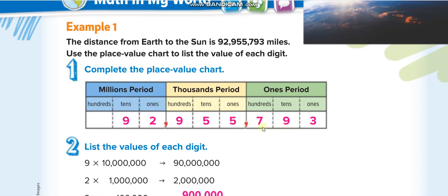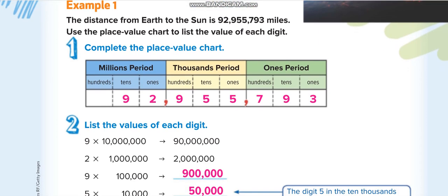After every three digits we use commas to separate the periods. The first three digits are the ones period, the second three digits are the thousands period, and the next three are the millions period. For example, 92 millions is separated from the rest using commas.